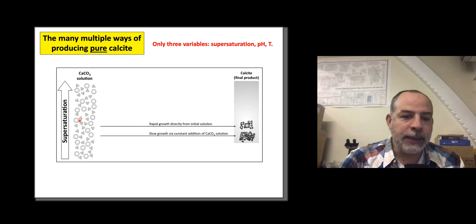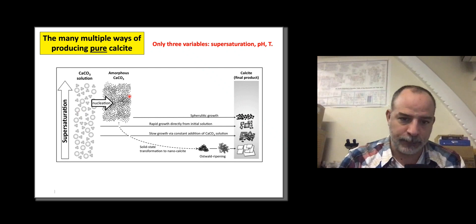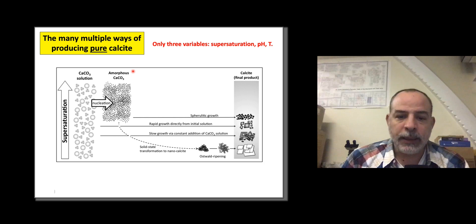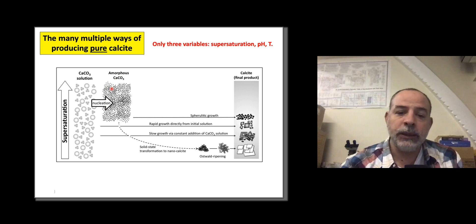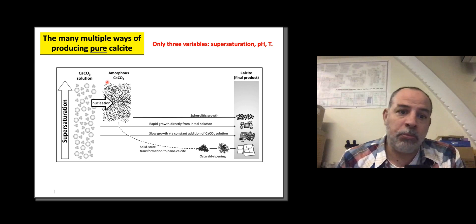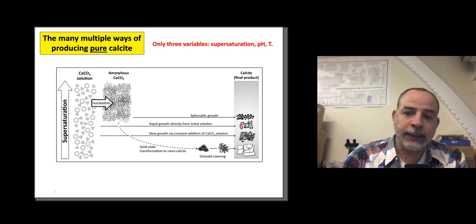What happens if we increase supersaturation? We form an amorphous phase — amorphous calcium carbonate, a hydrated and disordered phase. You can separate it from water and crystallize it by solid state. If you leave it in water, this amorphous phase is metastable, surviving a couple of minutes before crystallizing as calcite via spheroidal growth. Increasing supersaturation even more leads to calcite via metastable phases: aragonite at high temperature, vaterite at ambient temperature, and ikaite at very low temperatures below 5 degrees C.